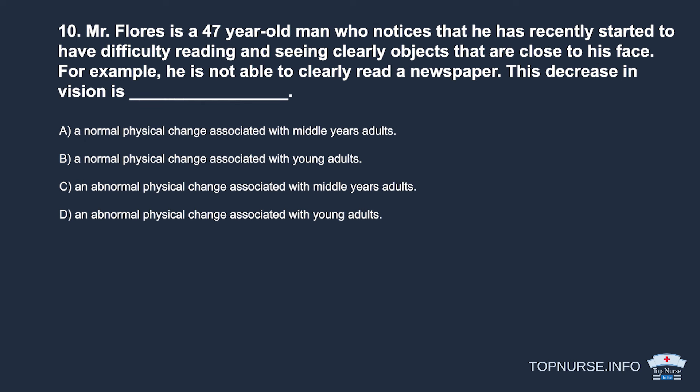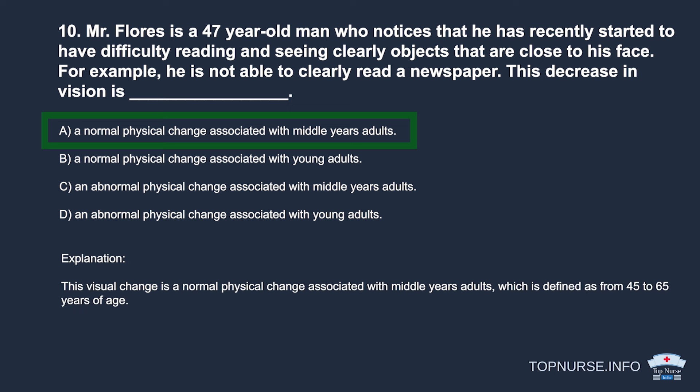Question 10: Mr. Flores is a 47-year-old man who notices difficulty reading and seeing clearly objects close to his face — for example, he cannot clearly read a newspaper. This decrease in vision is: a. A normal physical change associated with middle-years adults. b. A normal change in young adults. c. An abnormal change in middle-years adults. d. An abnormal change in young adults. Correct answer: a. A normal physical change associated with middle-years adults, defined as ages 45 to 65.